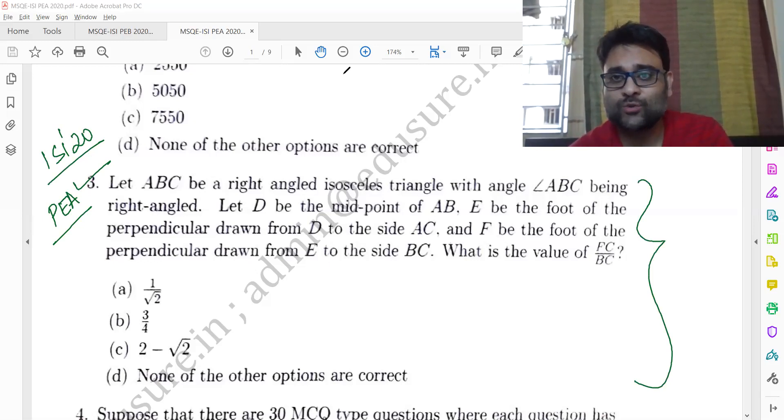Let's go to the whiteboard to solve it. We have triangle ABC which is a right-angled isosceles triangle with angle ABC being the right angle. D is the midpoint of AB, E is the foot of the perpendicular drawn from D to the side AC, and F is the foot of the perpendicular drawn from E to BC.